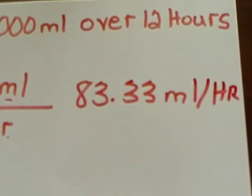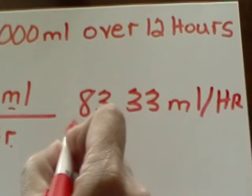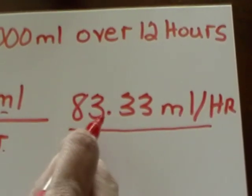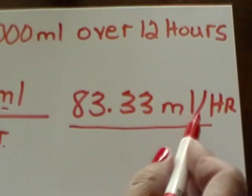You always must put with your answer in the blank what you are solving for. 83.33 milliliters per hour.